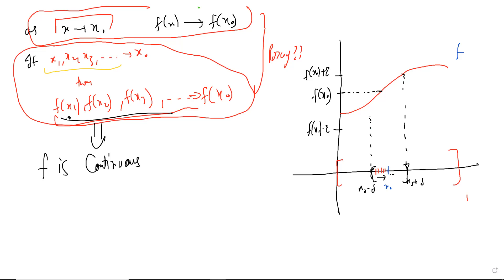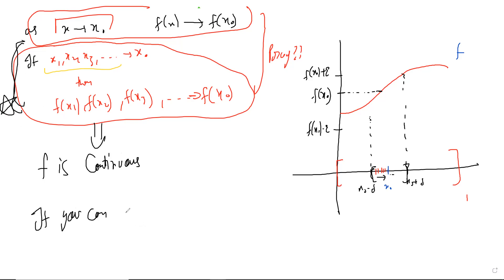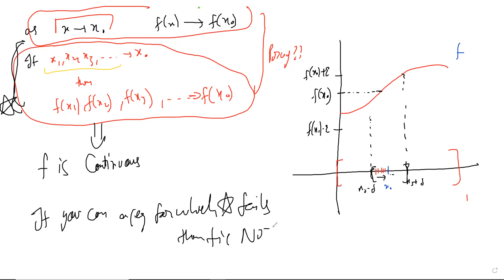Checking all sequences is nearly impossible, but the useful direction is: if you can find even one sequence for which the condition fails — meaning the image sequence does not tend to f(x-naught) — you can immediately conclude the function is not continuous. So this is most useful in proving that something is NOT continuous.